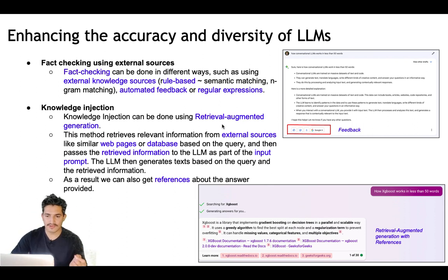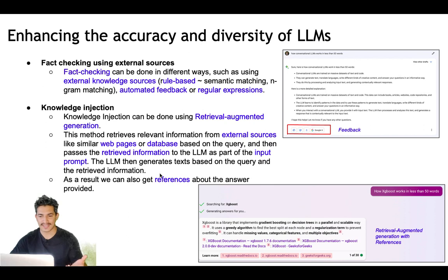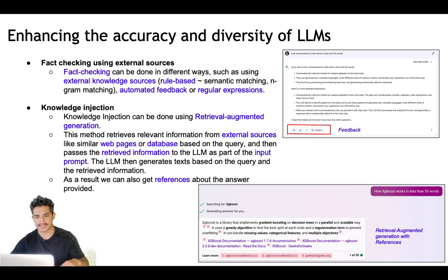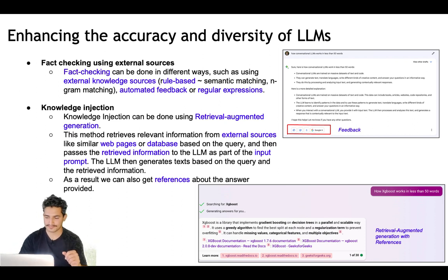Knowledge injection can be done using retrieval augmented generation (RAG), which is getting a lot of popularity and research. The method retrieves relevant information from external sources such as web pages and databases based on the query, and that retrieved information is also passed in the input prompt so the LLM generates text based on both the query and the retrieved information — making it more accurate. The result can also include references to the web pages, as seen in Microsoft Bing Chat, which gives answers with references to relevant documents.